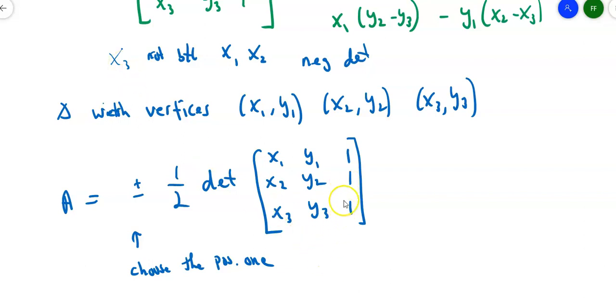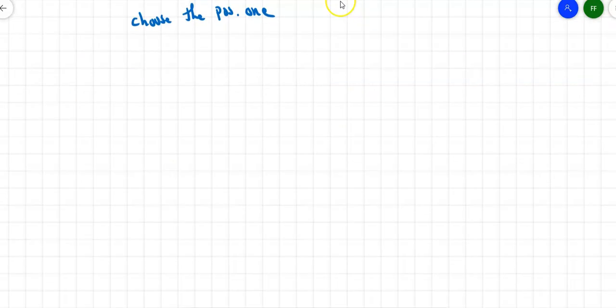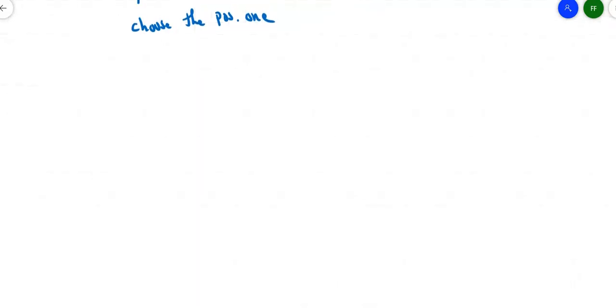It doesn't mean that the area can be negative, the area can't be negative. So you're going to choose whatever makes that positive. All right, let's try one. So suppose I've got a triangle with these vertices. I've got 1, 3. I've got 7, 5. I've got 4, 8. What's the area?